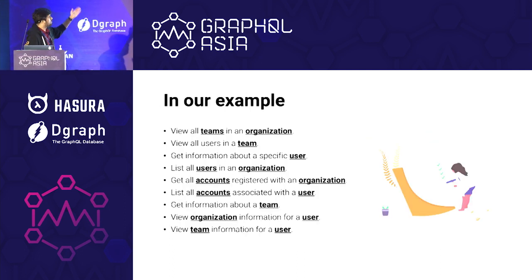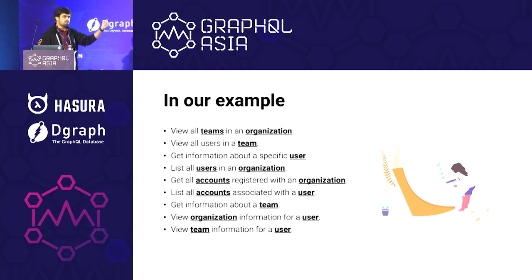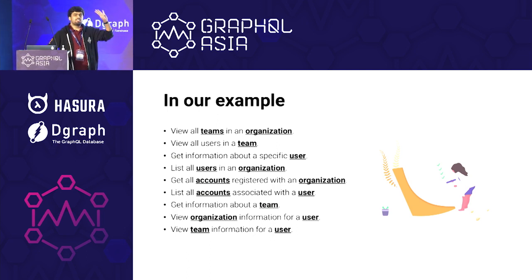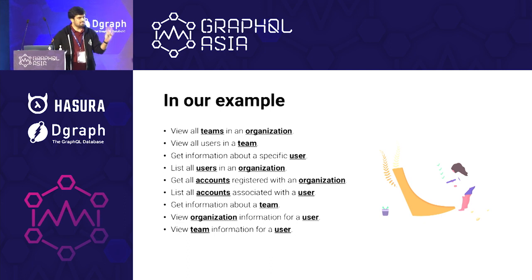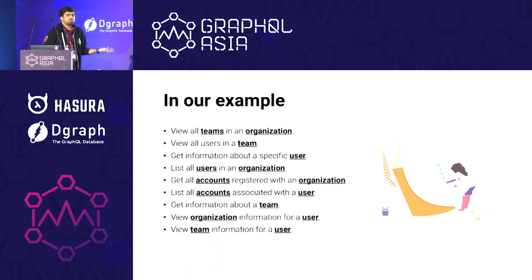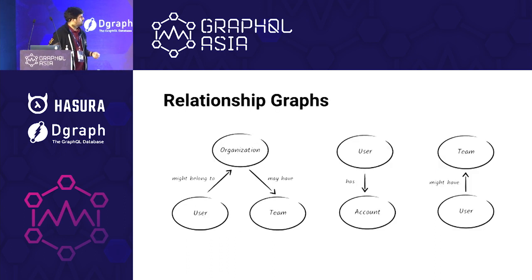Once you have these entities, our example looks something like this: we have Team, Org, User, and Account — just four types. And that's it. Once you have these types, you just have to find the relationship between them.